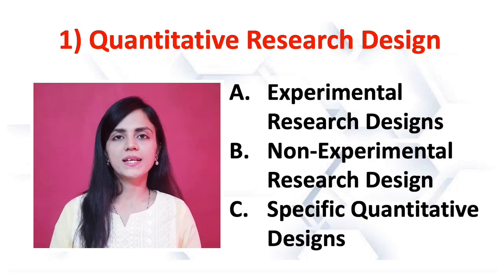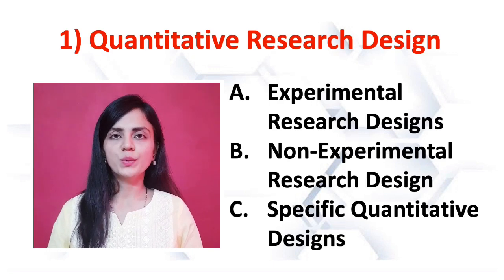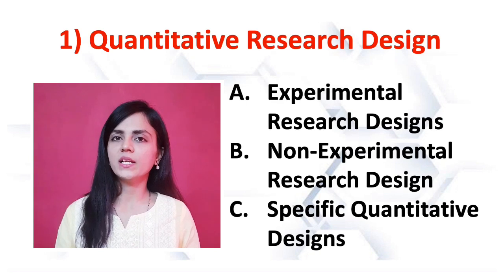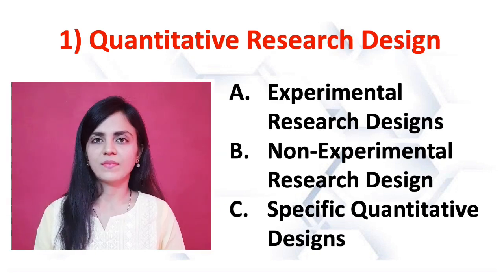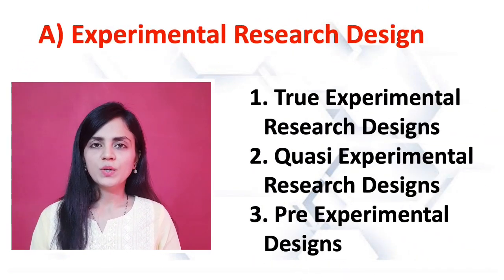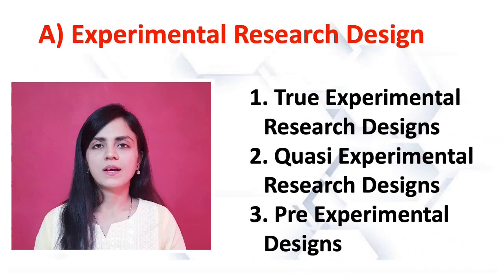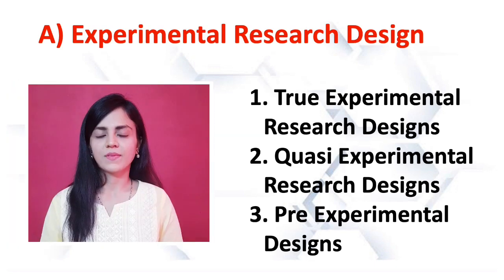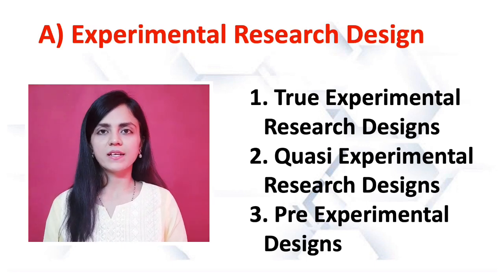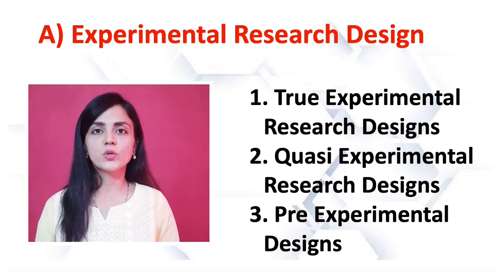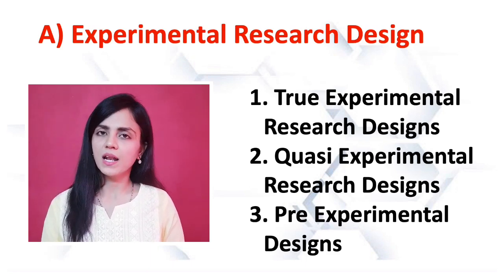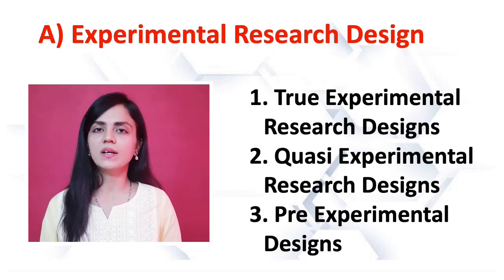The three categories in quantitative research designs are: number one, experimental research designs; number two, non-experimental research designs; number three, specific quantitative designs. These are further divided into subclasses. In experimental research designs we can again see three categories: number one, true experimental designs; number two, quasi-experimental research designs; number three, pre-experimental research designs.